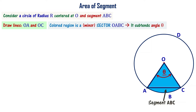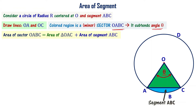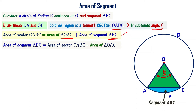We want to find the area of segment ABC. The area of sector OABC equals area of triangle OAC plus area of segment ABC. Rearranging this formula: area of segment ABC equals area of sector OABC minus area of triangle OAC.